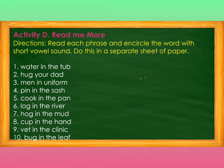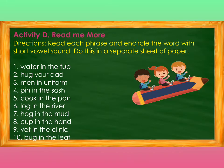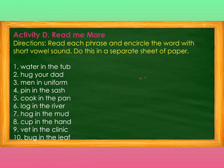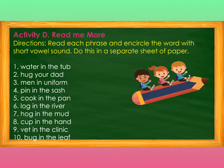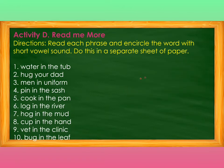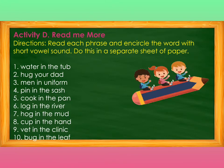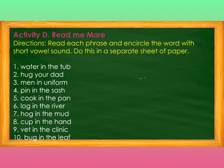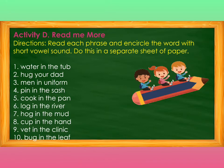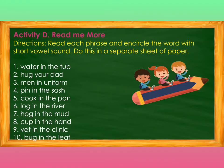Excellent! Let us actively engage in Activity D: Read Me More. Read each phrase and encircle the word with short vowel sounds. Do this on a separate sheet of paper. Number 1: water in the tub. Number 2: hug your gut. Number 3: men in uniform. Number 4: pin in the sash. Number 5: cook in the pan. Number 6: love in the river. Number 7: hug in the mud. Number 8: cop in the hand. Number 9: vet in the clinic. Number 10: bug in the lift.